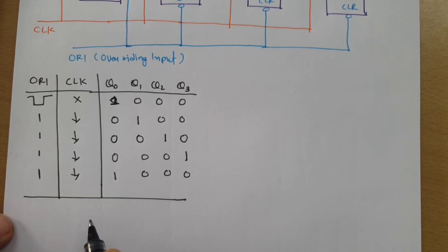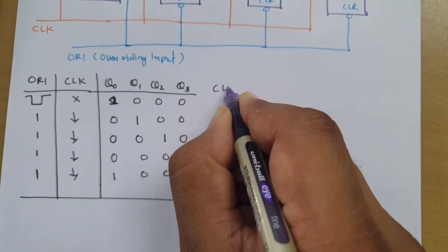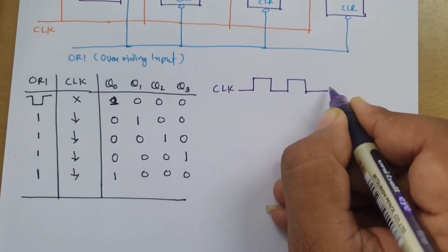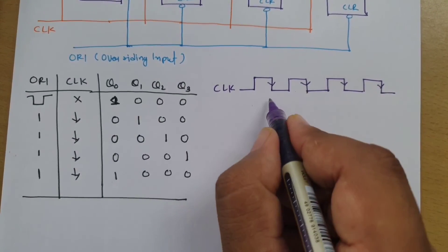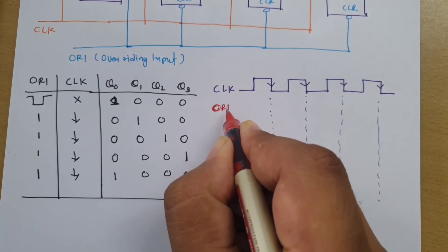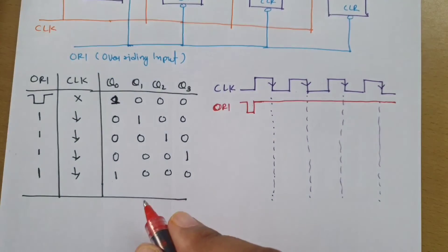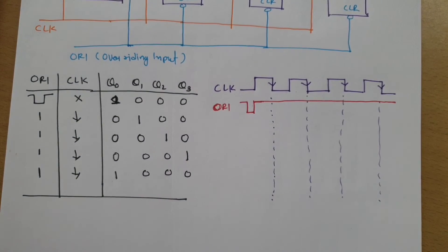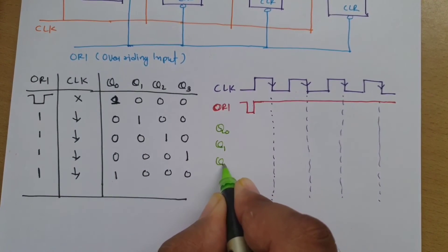This ring counter is an application of the shift register — the one rotates in the ring, which is why it is called a ring counter. Now I'll explain the waveform of this ring counter. Looking at the clock waveform, we are using a negative edge trigger clock, so transitions are shown at the negative edge. We also have the overriding input waveform — initially just one negative pulse. Our goal is to observe the outputs q0, q1, q2, and q3.